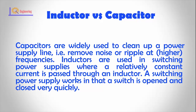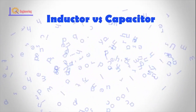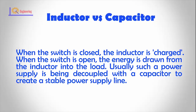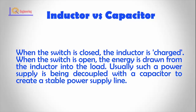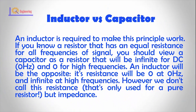A switching power supply works by opening and closing a switch very quickly. When the switch is closed, the inductor is charged. When the switch is open, the energy is drawn from the inductor into the load. Usually, such a power supply is decoupled with a capacitor to create a stable power supply line, and an inductor is required to make this principle work.